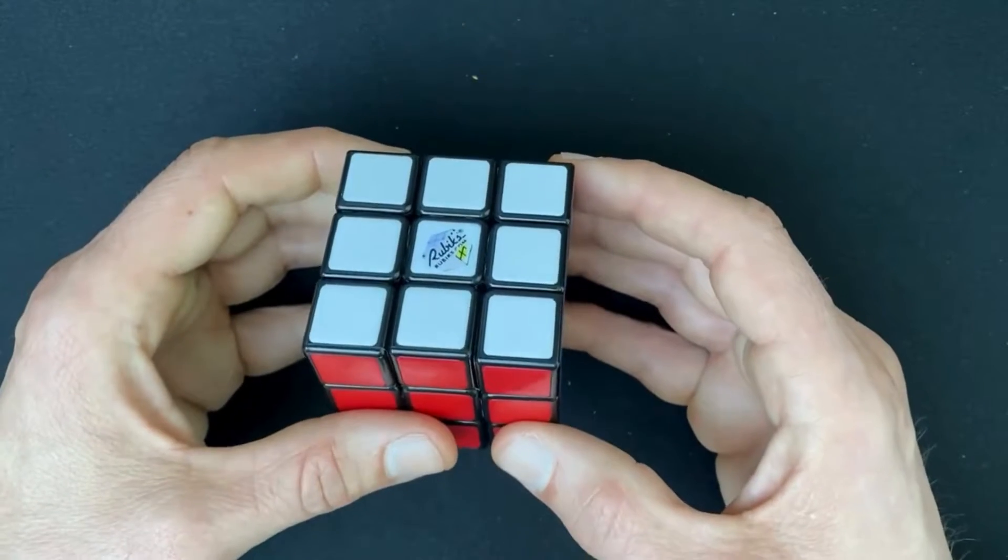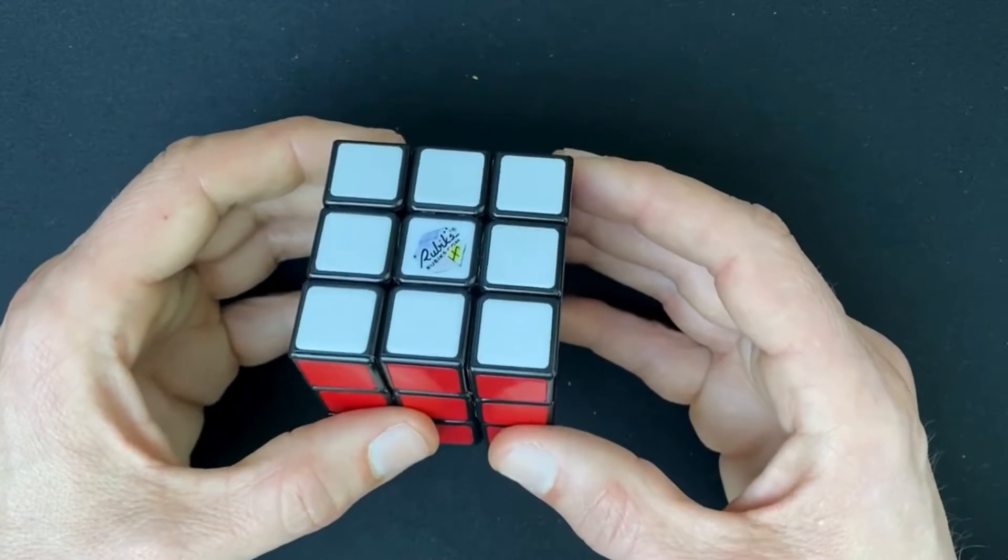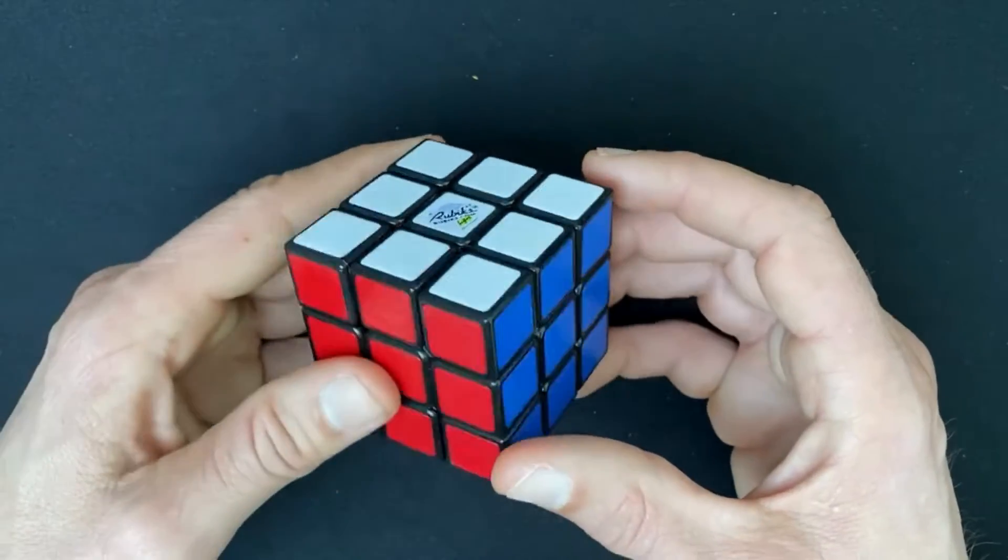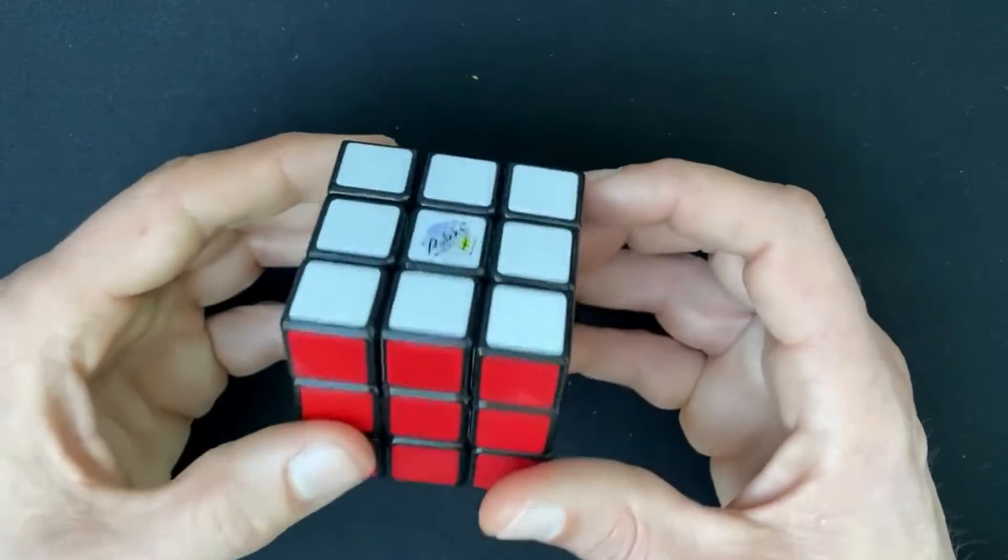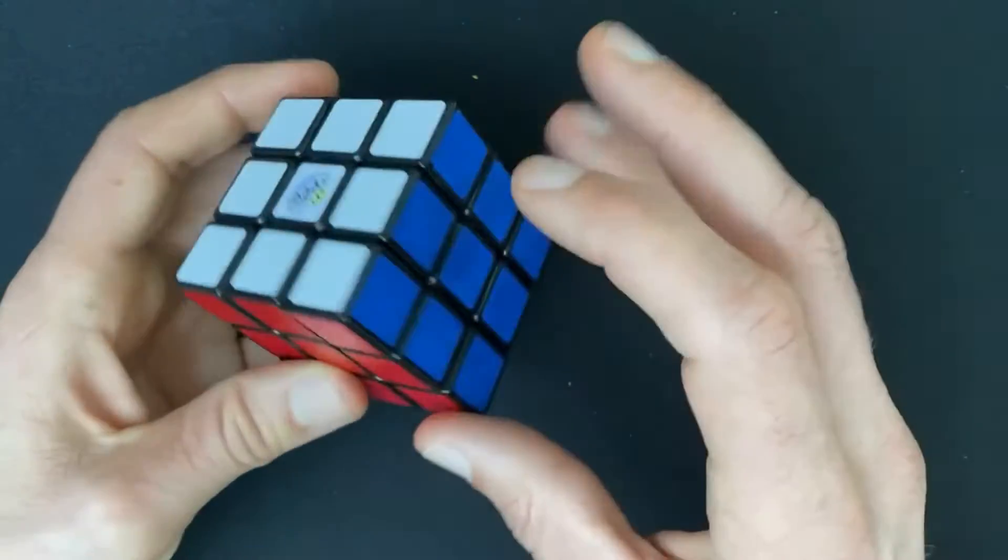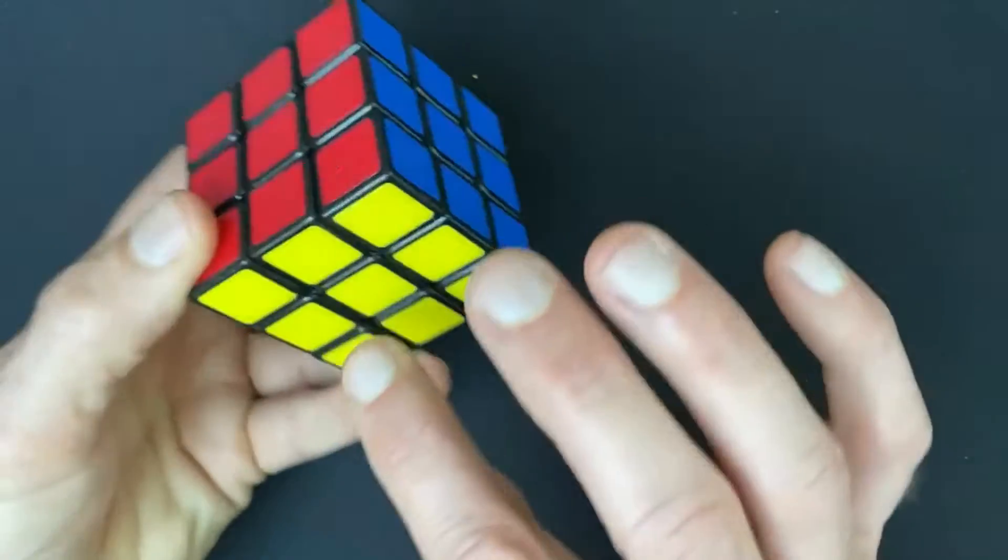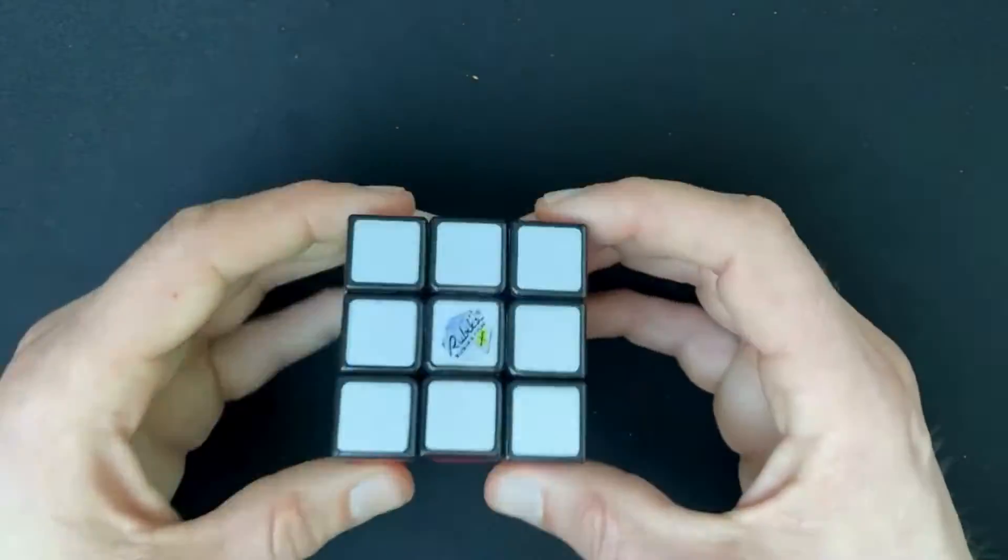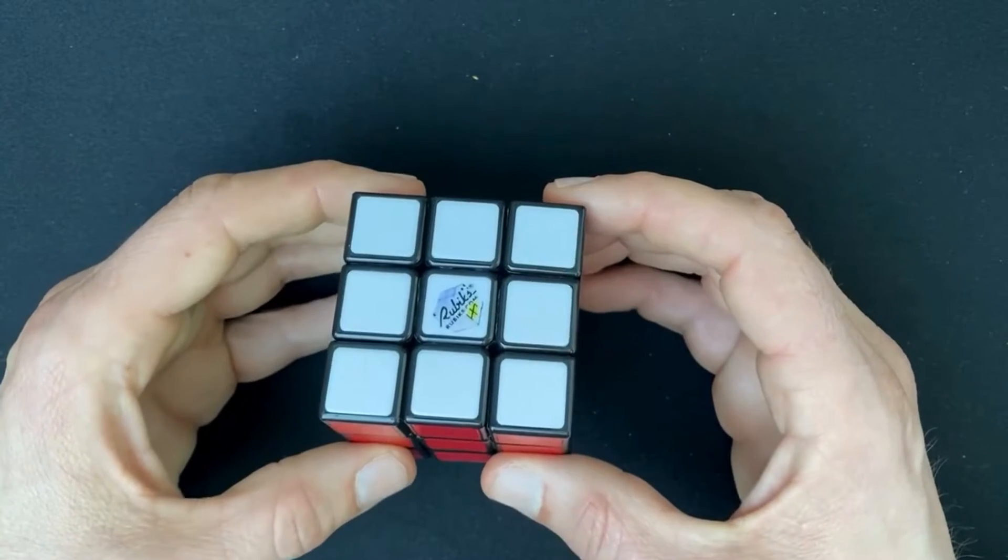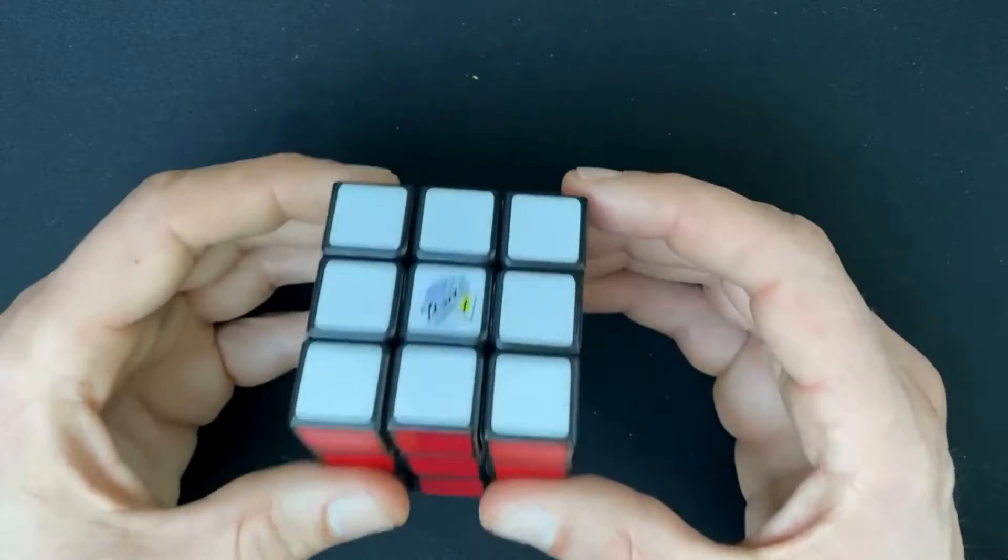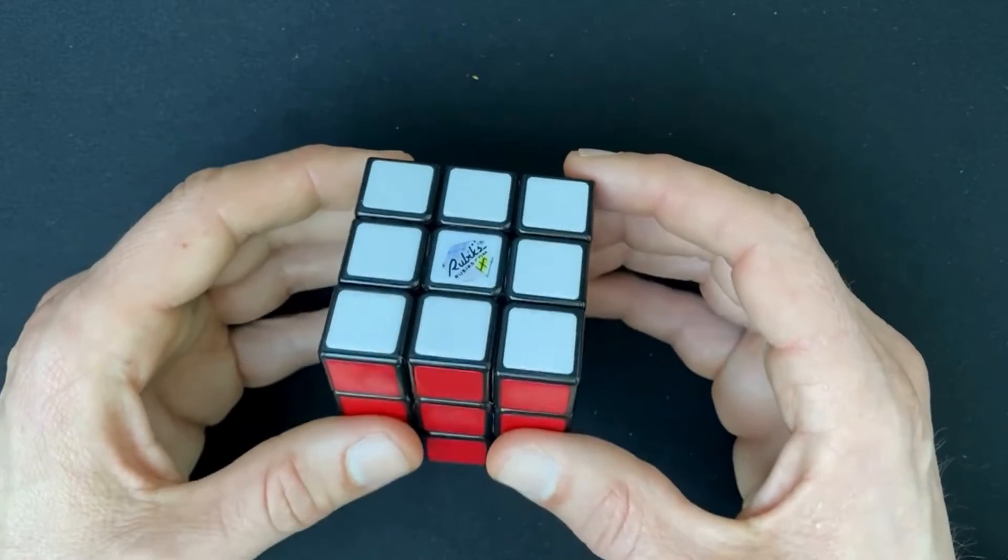Before I start showing the rotations, let me explain the basic structure of the cube. On the 3x3 Rubik's cube, the center pieces are stuck, and so they are important and they give you some orientation when you start solving the cube.